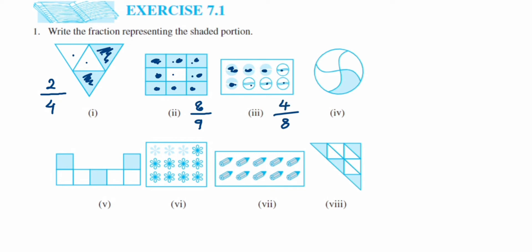Now we have a circle. Count how many parts are given: one, two, three, four. Out of four, how many parts are shaded? Only one part. So the fraction will be one upon four.